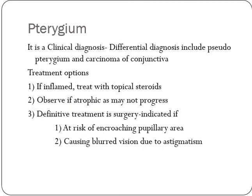Pterygium is easy to diagnose based on clinical presentation. The main differential diagnoses are carcinoma in situ of the conjunctiva, obvious conjunctival carcinoma, or pseudopterygium — where fibrovascular proliferation is seen but not in the interpalpebral area, with a history of chemical injury. Examination will help differentiate it from pterygium. You can also see adhesions called symblepharon.